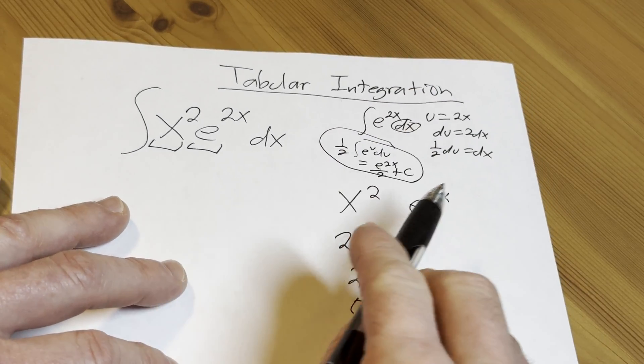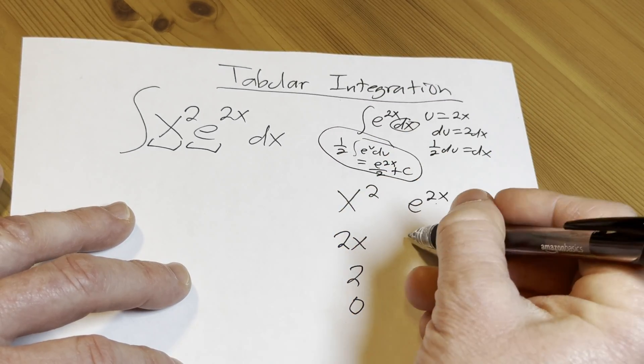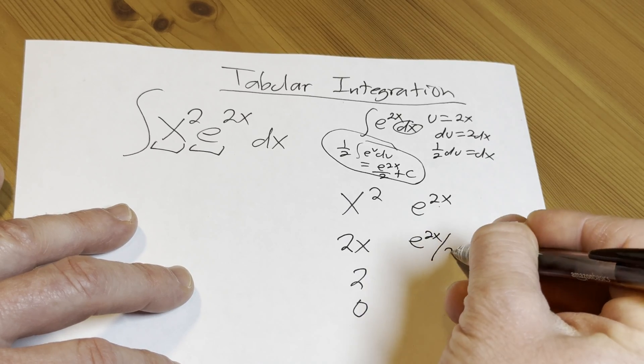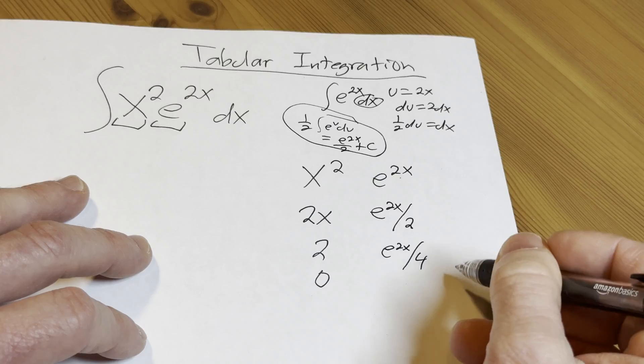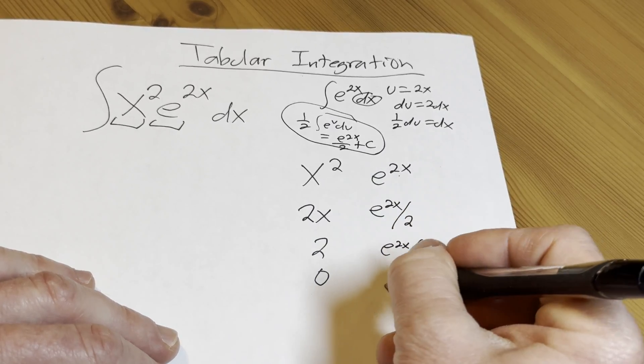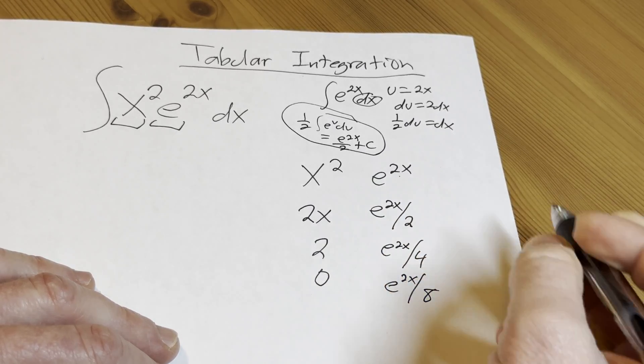The point is you don't have to do that. All you do is divide by the number: e to the 2x over 2. Then you do it again: e to the 2x over 4, because you're dividing by 2 again, so you're really multiplying by one half. Do it again: e to the 2x over 8.